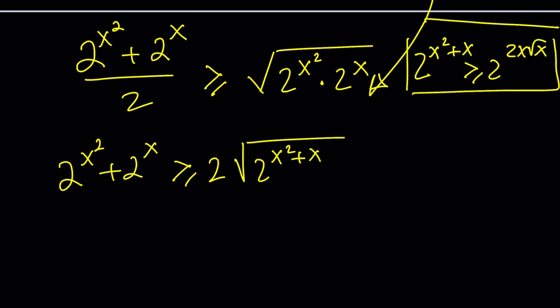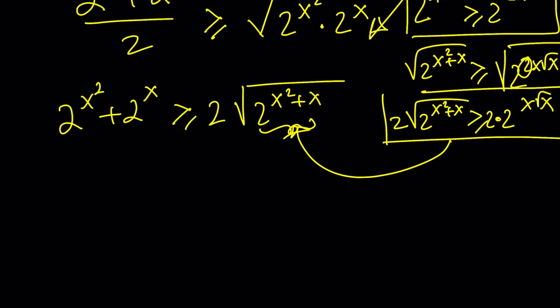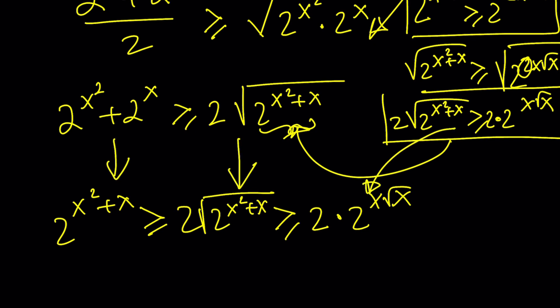We had this inequality already. So now we can use that inequality right here. Since we have this expression, since this is greater than or equal to that, we can square root both sides. Then its square root is going to be greater than or equal to the square root of this, which cuts the power in half. So now we can say that the square root of 2 to the power X squared plus X is greater than or equal to 2 to the power X root X. If you multiply both sides by 2, 2 times 2 to the power X squared plus X under the radical is greater than or equal to 2 times 2 to the power X root X.